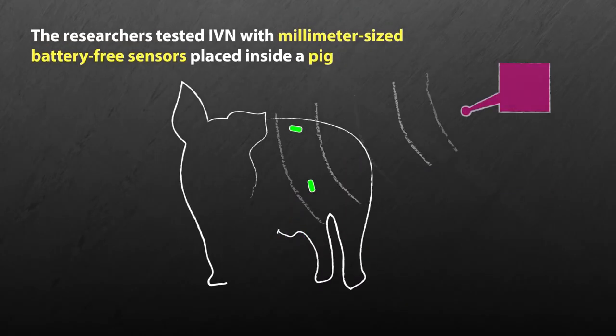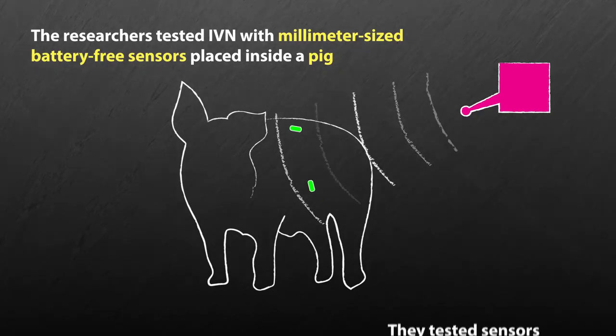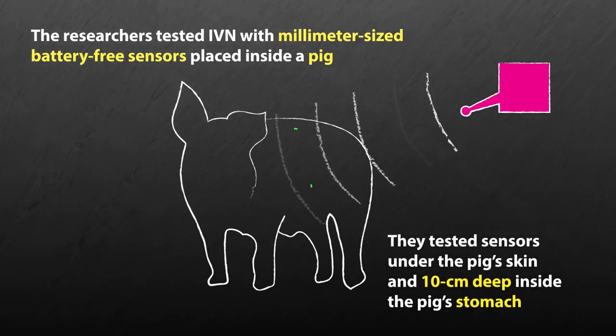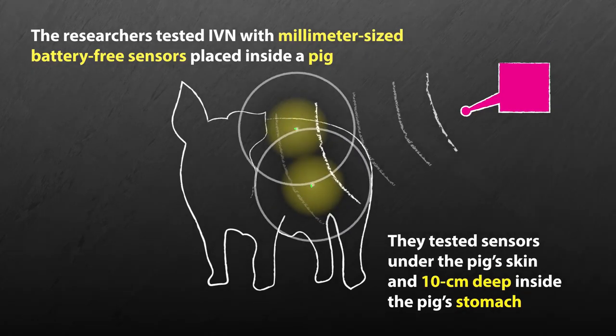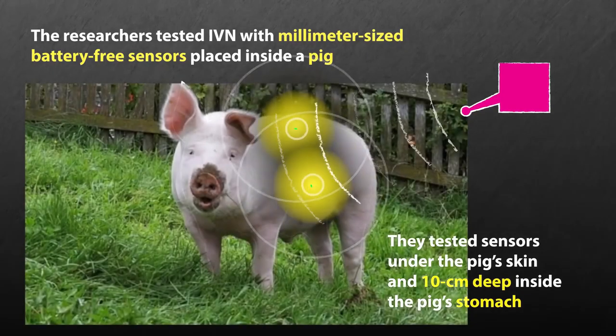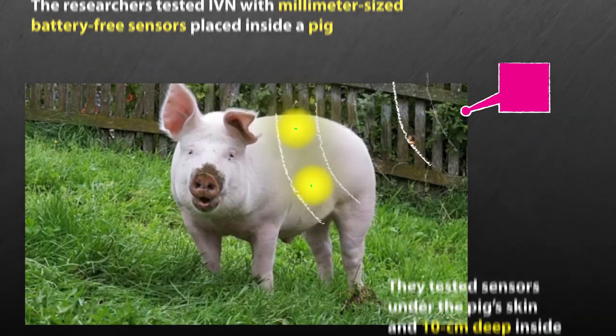The researchers have tested IVN with millimeter-sized, battery-free sensors placed inside a pig. They have shown how to power up and communicate with battery-free tags placed under the pig's skin and 10 centimeters deep inside the pig's stomach.